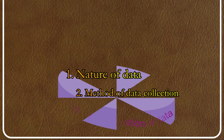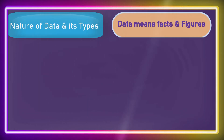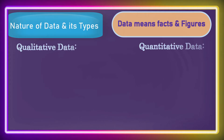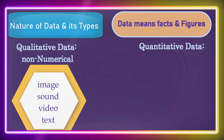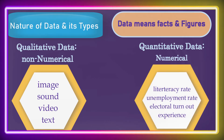Keeping in view the nature of data, a second look at the same definition suggests there are two types of data: facts and figures — that is, qualitative and quantitative data. If the data is in non-numerical form, it is qualitative data. As mentioned earlier, image, sound, video, and text are forms of qualitative data. Examples of quantitative data include literacy rate, unemployment rate, electoral turnout, and experience in years.